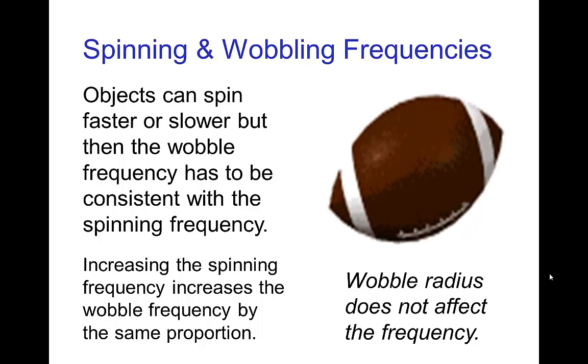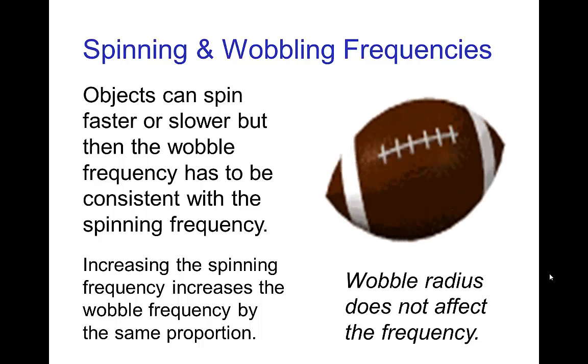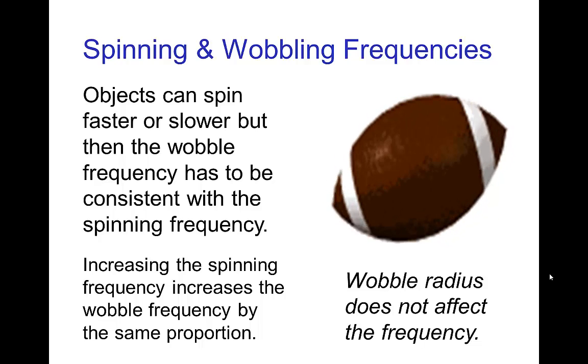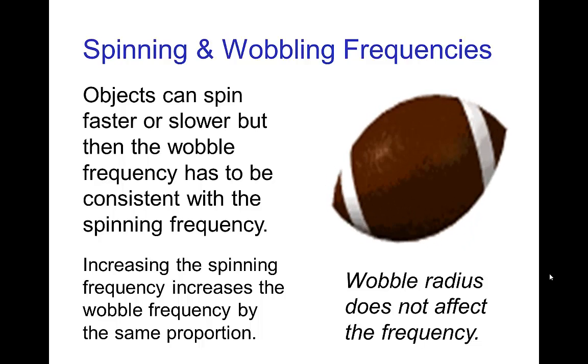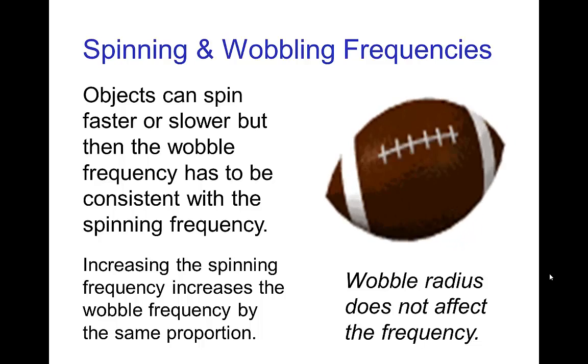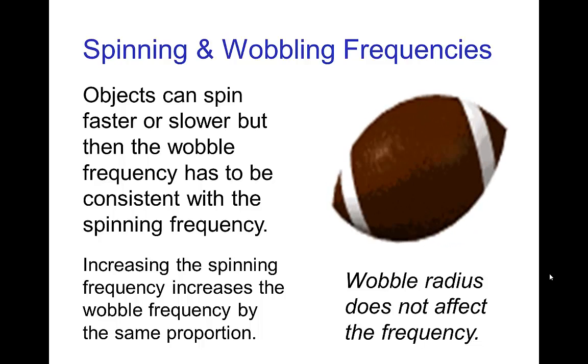So, if you throw a football with a tight spiral so that the wobble radius is a very small wobble, so it's almost a perfect spin, it will still have a wobbling frequency which depends on how quickly it's spinning.